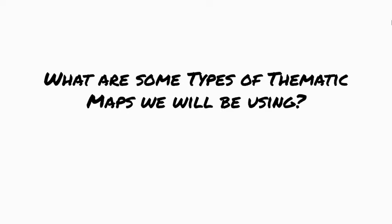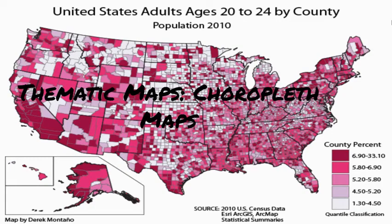What are some types of thematic maps we will be using? Choropleth maps: a choropleth map shows us geospatial information with colors to represent statistical or demographic data. In this example, the map shows that the counties with the highest percentage of adults between the ages of 20 and 24 are symbolized by the darkest color. When we ask what is happening where, we can say California has a remarkably high percentage of counties with people in their early 20s. There are also large counties in Arizona and the coastal areas with people in their early 20s. This leads us to ask why, so we can then investigate those questions more deeply after looking at this data.